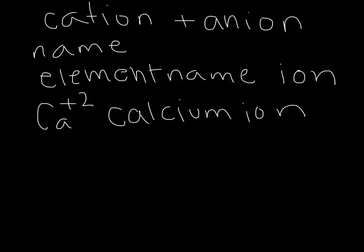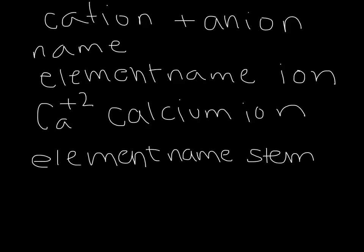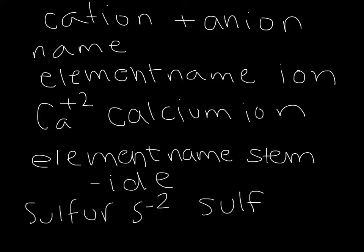For an anion, to name that I just take my element name stem and then I add ide at the end of it. So if I have sulfur, sulfur is S minus 2, that becomes sulfide.